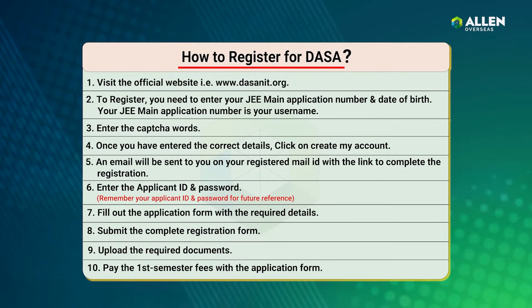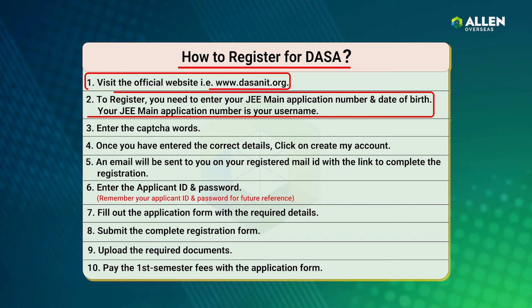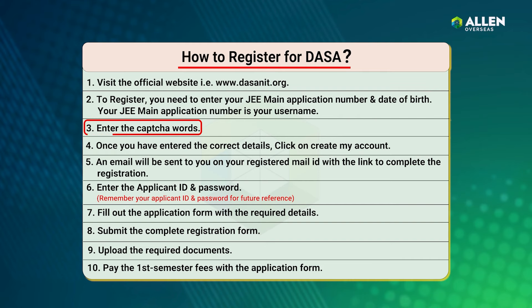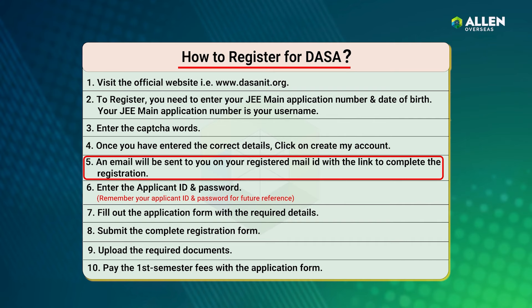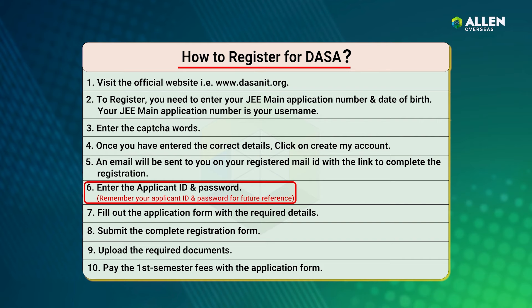Here is a step-by-step guide to register for the DASA scheme. First, visit the official website at www.dasanit.org. To register, enter your JEE Main application number and date of birth — your JEE Main application number is your username. Enter the captcha words. Once you have entered the correct details, click on 'Create My Account'. An email will be sent to your registered email ID with a link to complete the registration. Enter the applicant ID and password, and remember them for future references.